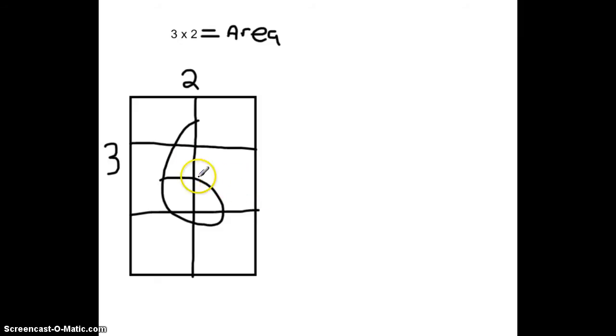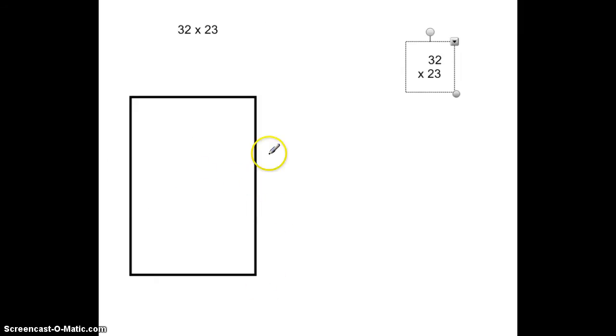If we use the same model when we're multiplying larger numbers, like 32 times 23, we could see that we could break up this side into 23 equal size shapes, or we could say, let's pretend this side is 20 plus another 3 long.